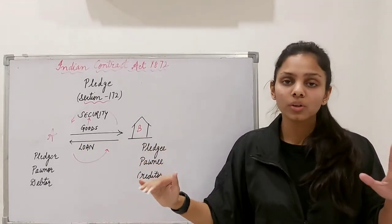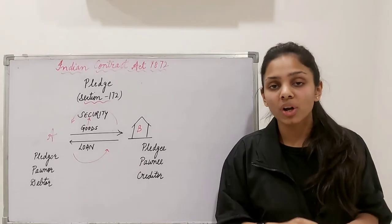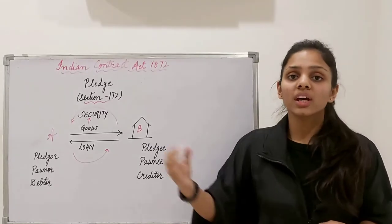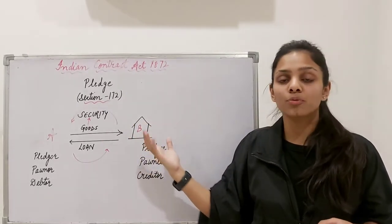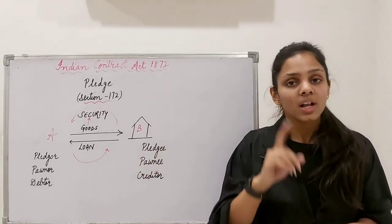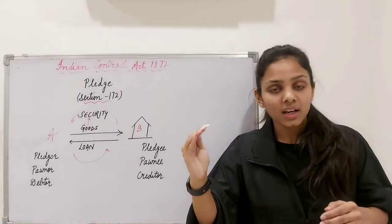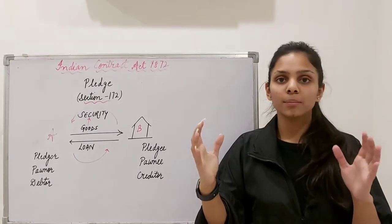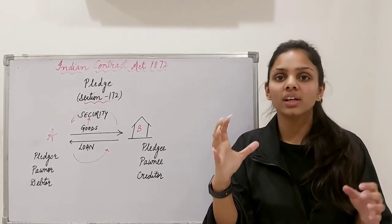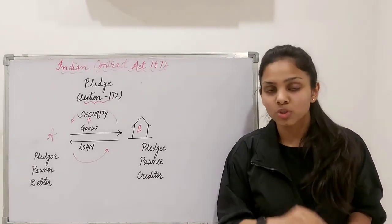An important point in both bailment and pledge is that for these contracts to commence, there must be delivery or transfer of physical possession of goods from one person to the other. Also, in Contract of Bailment, as soon as the specific purpose is accomplished, the bailee cannot retain those goods. As soon as the suit is stitched, the tailor cannot keep the suit with him for a long time — he has to return those goods back. Return of goods was a very special feature of Contract of Bailment.